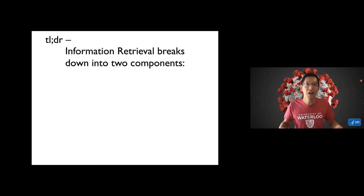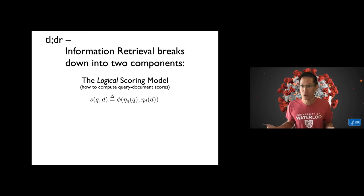All right, and that sets the mood for the entire talk. So my entire short talk is summarized in this slide. What we're doing here is proposing to break information retrieval down into two components. The first is a logical scoring model that tells you how to compute query document scores. The formula says you have eta q and eta d, these are representation functions that take in a query and a document, generate a representation function, and then you have a phi that computes a score between them.